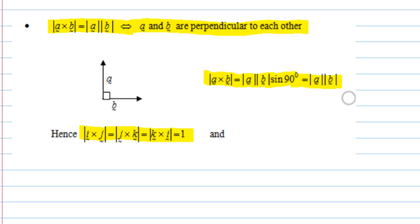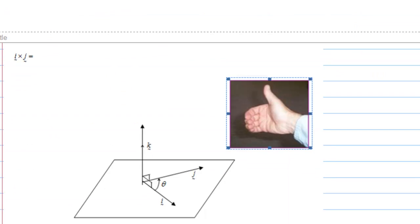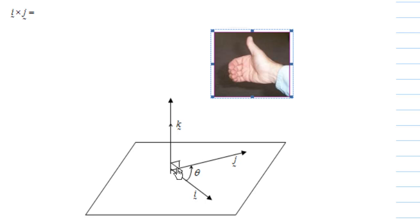This is because the magnitude of i is 1, magnitude of j is 1, and magnitude of k is 1. Now, what is actually i cross j? Let's look at the following diagram. We have vector i along the x-axis and vector j along the y-axis, and the angle between them is 90 degrees.